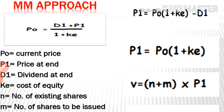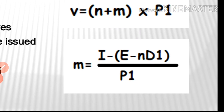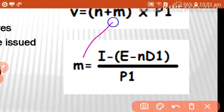Another equation suggested is for the value of the firm: V = (N + M) × P1, where N is the number of existing shares and M is the number of new shares to be issued to meet additional fund requirements, and P1 is the price of the share. So total shares (N + M) multiplied by price equals the value of the firm. The equation for M is: M = (I − E − ND1) / P1, where I is investment required, E is expected earnings, N is existing shares, and D1 is dividend.